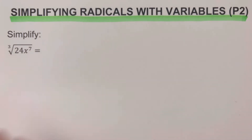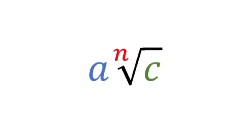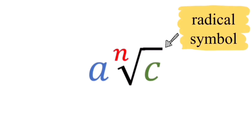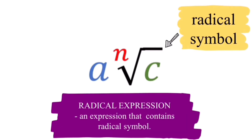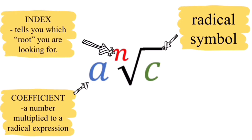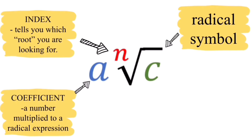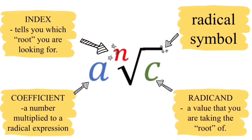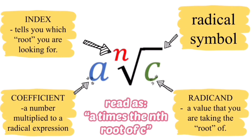Before we jump into the first example, let's have a review on the parts of a radical expression. The first part is the radical symbol. Our A here is called the coefficient — a number multiplied to the radical expression. The letter N is called the index; this tells you which root you're looking for. If the index is not written, that invisible number is 2. We also have a letter C, called the radicand — the value that you are taking the root of. This expression is read as A times the nth root of C.